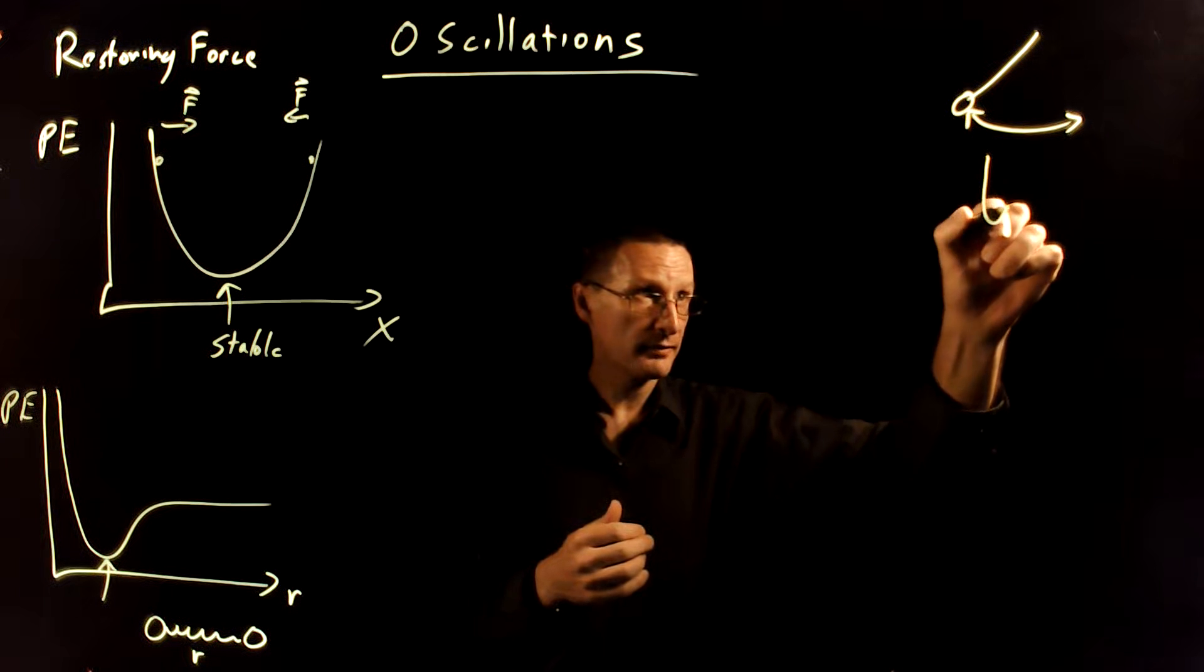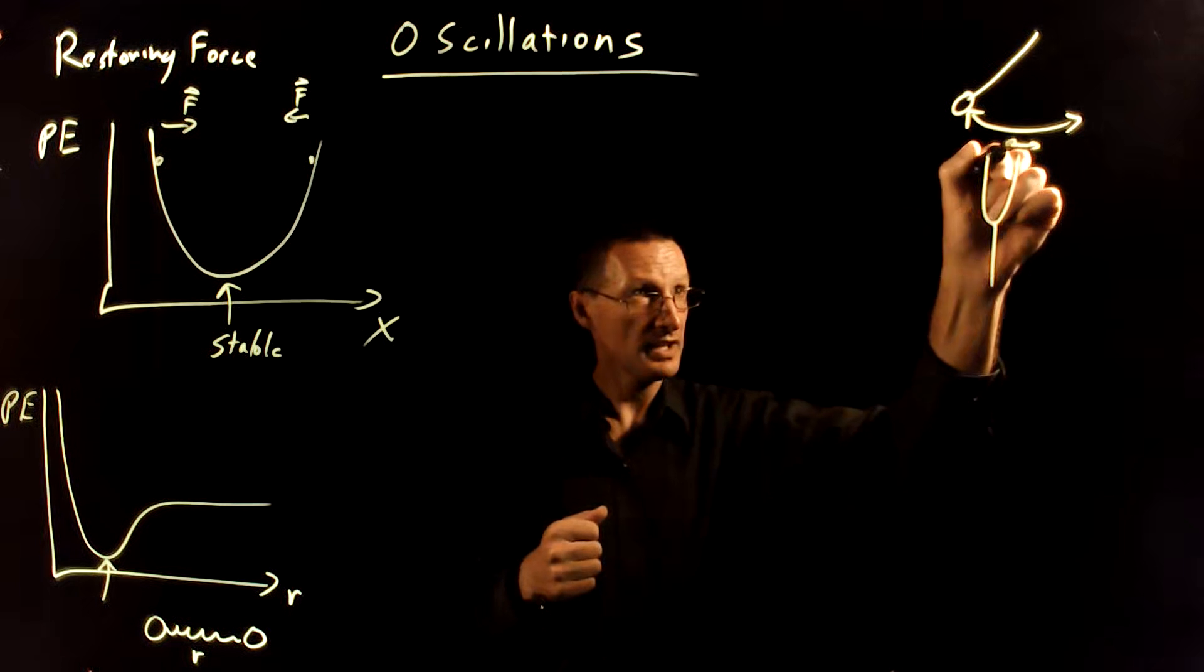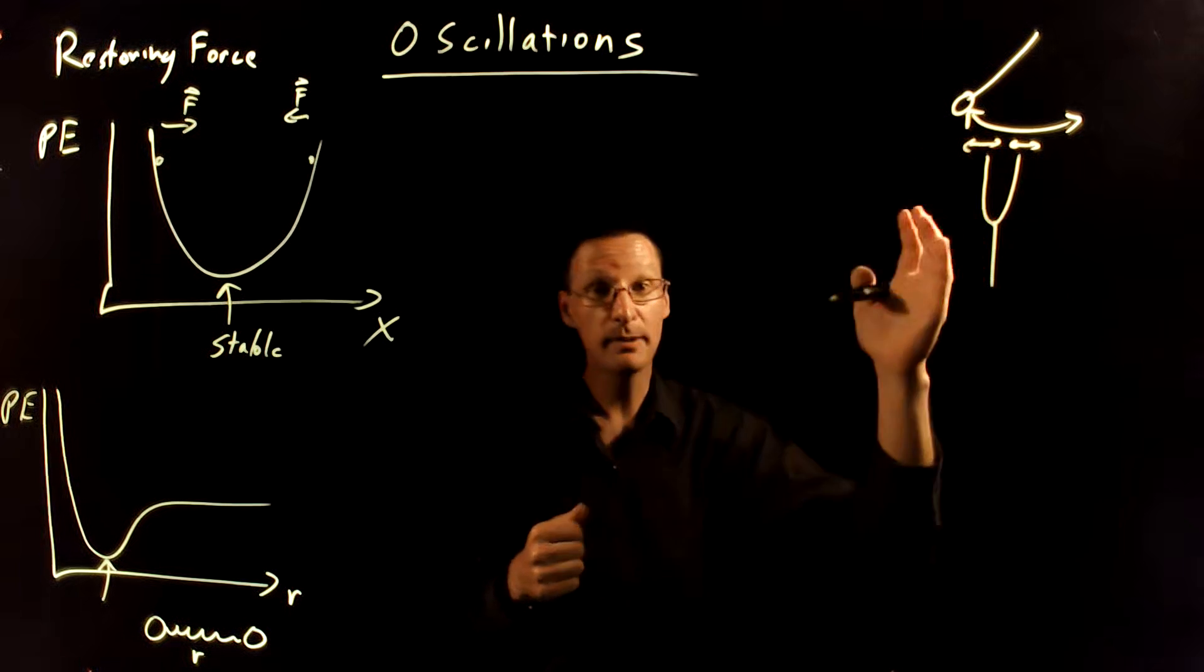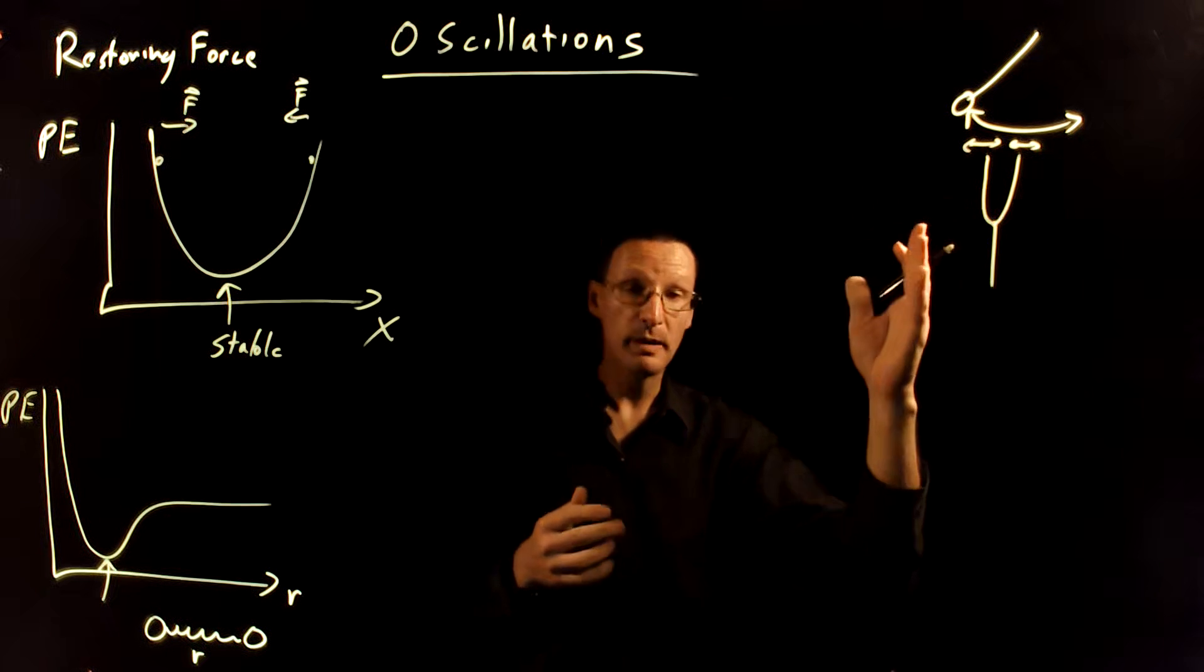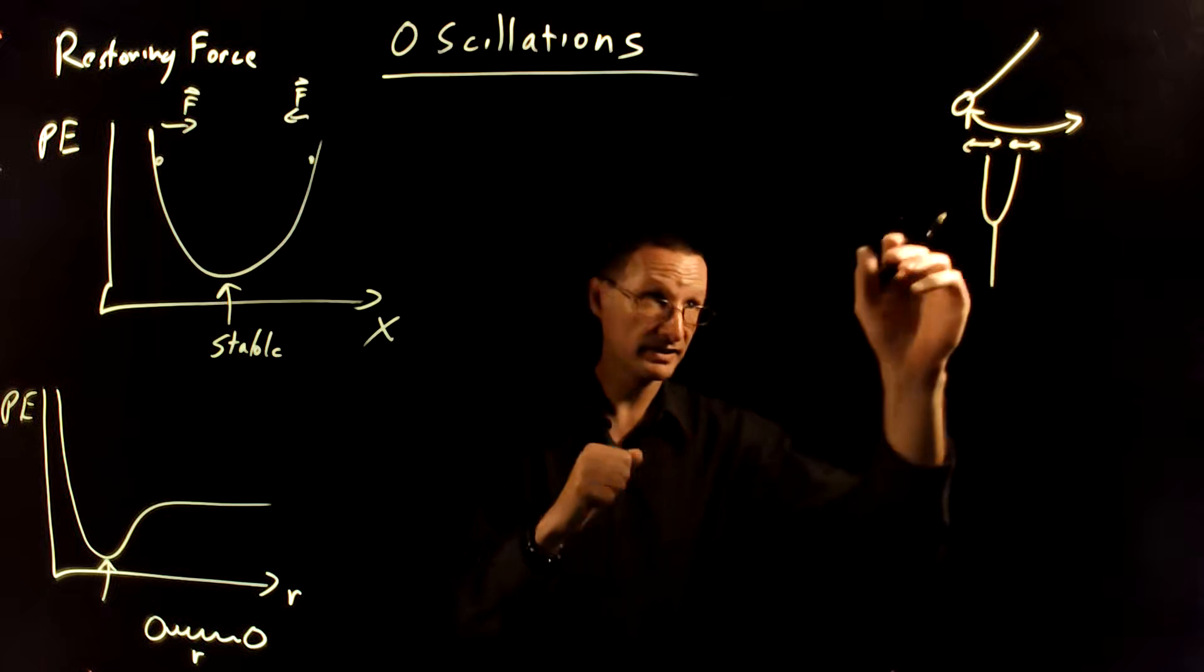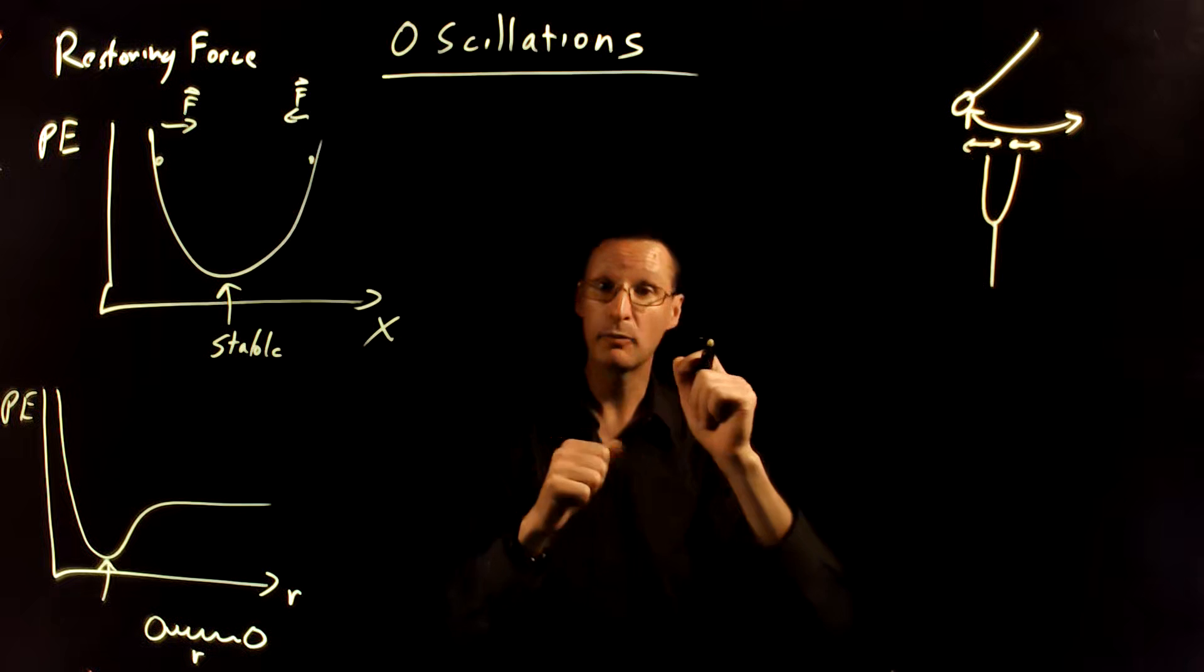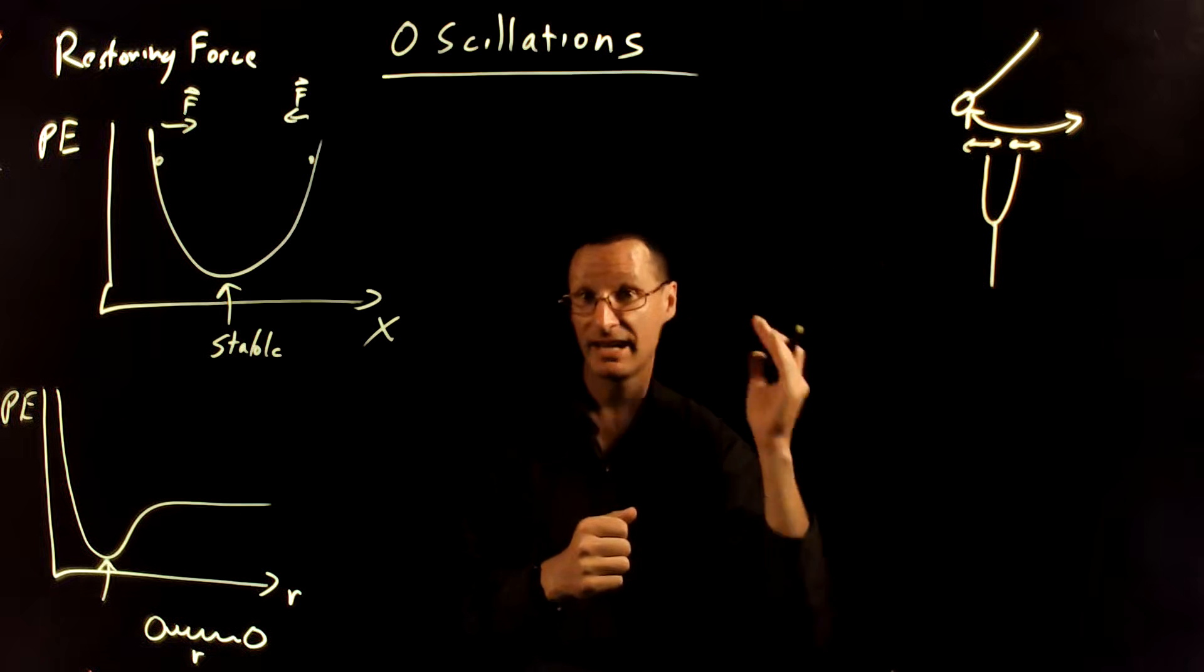Think about a different example, a tuning fork. If you hit that tuning fork, the tines of the tuning fork are vibrating back and forth against their equilibrium position. Remember that all things behave like springs, and so if you deform the tuning fork tines a little bit, they want to go back to their equilibrium position. And in doing that, they produce sound that we can hear.